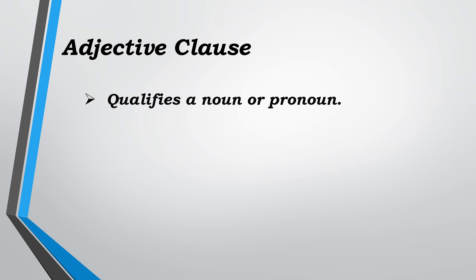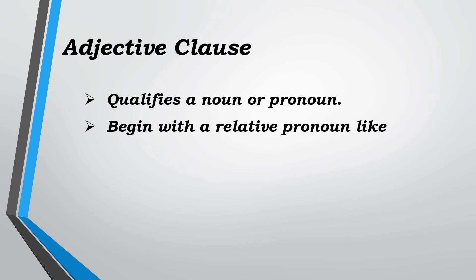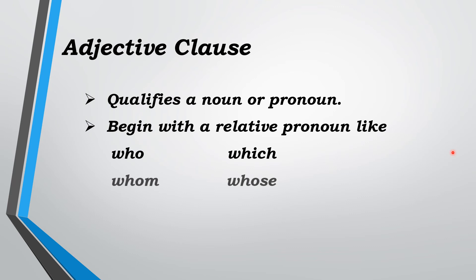What is the work of an adjective clause? The adjective clause works as an adjective — it qualifies a noun or pronoun. It begins with relative pronouns like who, which, whom, whose, where, and that. You can easily identify the adjective clause with these relative pronouns.